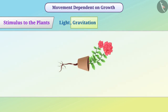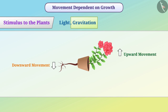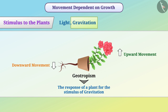We know that roots of the plant always grow downward and the shoot always grows upward. The downward movement of the roots and the upward movement of the shoot show a response to the stimulus of gravitation. The response given to the stimulus of gravitation is called geotropism. Growth of roots downward in the soil is positive geotropism, while the growth of the shoot upward and away from the soil is negative geotropism.